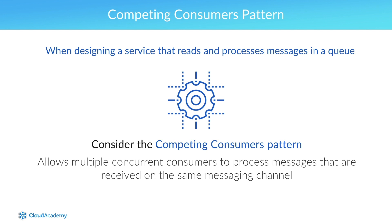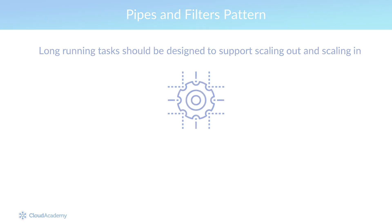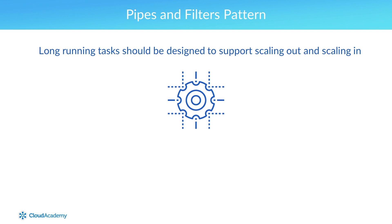In such cases, you should consider the competing consumers pattern, which allows multiple concurrent consumers to process messages received on the same messaging channel. By leveraging the competing consumers pattern, you can allow a system to process multiple messages concurrently, which optimizes throughput, improves scalability, and balances the workload. Long running tasks should be designed to support both scaling out and scaling in. Failure to do so can prevent an instance of a process from cleanly shutting down, or worse, data could be lost if a process is terminated forcibly.